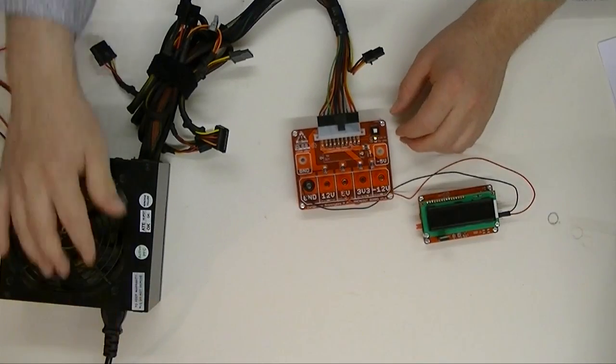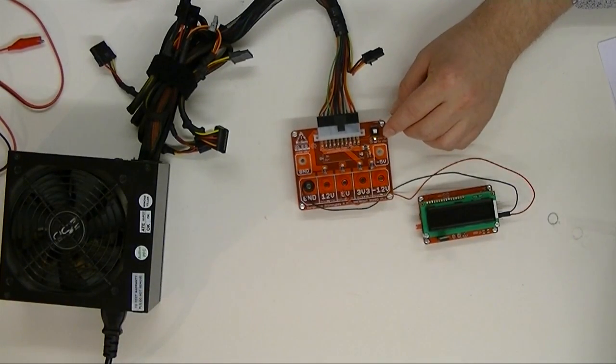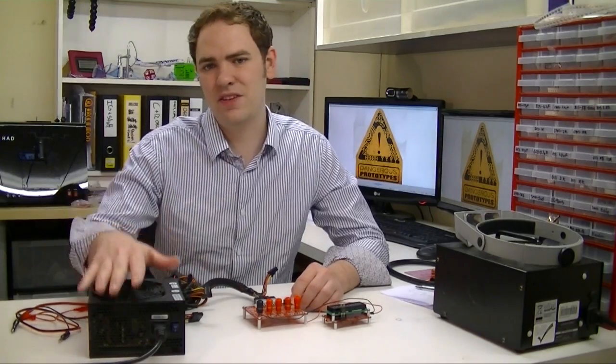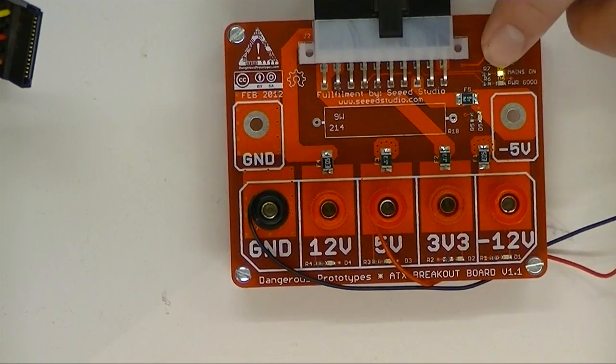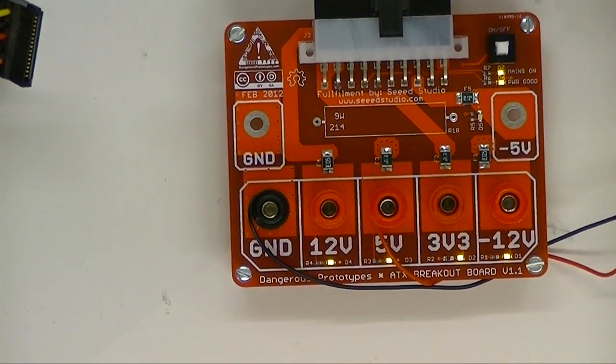When you flip on the bench supply, the mains on LED will come on. This shows that the power is connected to the supply, but it's not turned on yet. We just hit the switch and it starts up the power supply.